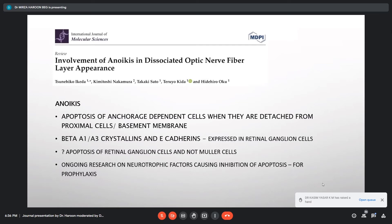Recently, this year, they came up with a hypothesis that it might be because of apoptosis of the anchorage-dependent cells or what we call as anoikis. Now, anoikis is apoptosis of the anchorage-dependent cells when they are detached from the proximal cells or the basement membrane. There are certain molecules which are expressed in retinal ganglion cells like beta A1, A3 crystalline, and E-cadherins. The question now was whether it is because of the apoptosis of the retinal ganglion cells or the Müller cells. There is still ongoing research in this topic, whether use of neurotrophic factors causing inhibition of apoptosis can be used for prophylaxis in such cases.